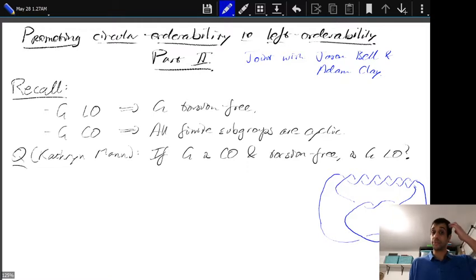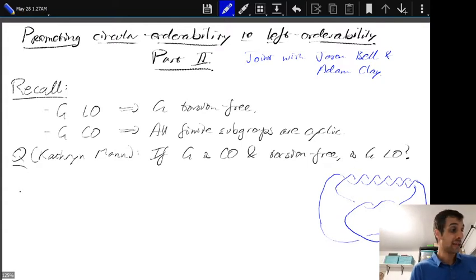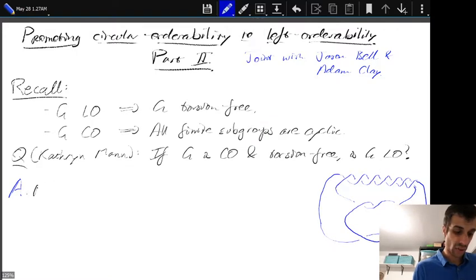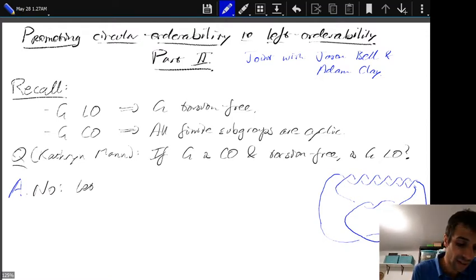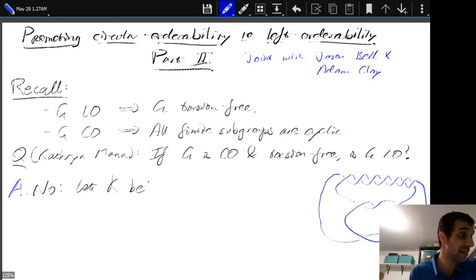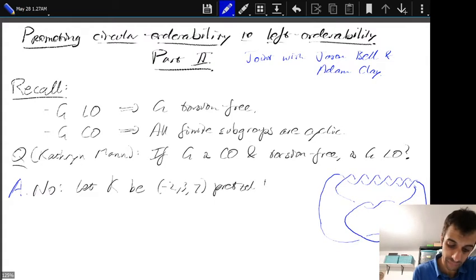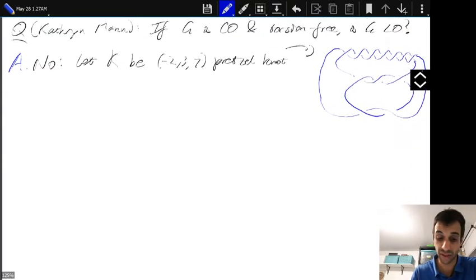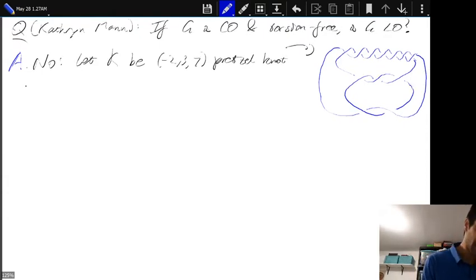Another way of saying that: is having torsion the only obstruction to a circularly orderable group being left orderable? The answer, which appears in the first paper with both Jason and Adam, is no. Here's a counter-example. Let K be the knot which is the minus-two-three-seven pretzel knot — here's an artist's impression of the minus-two-three-seven pretzel knot.